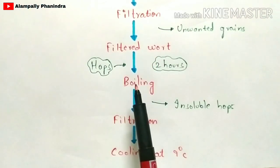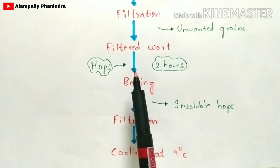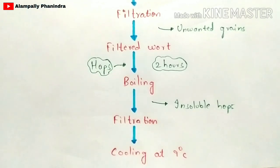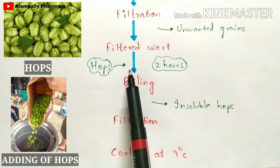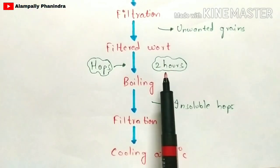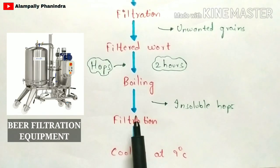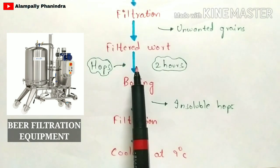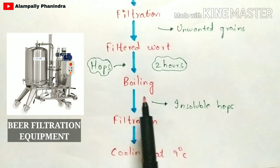The filtered wort now undergoes boiling for two hours. During the boiling stage, hops are added to the filtered wort. After boiling, filtration is performed again — because the soluble hops remain dissolved in the wort while insoluble hops are removed through this second filtration process.